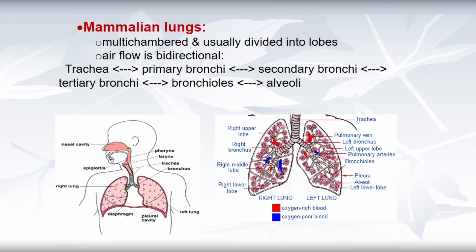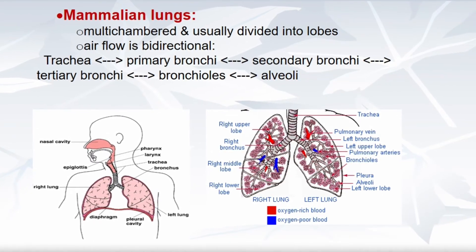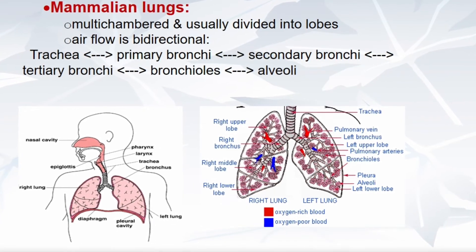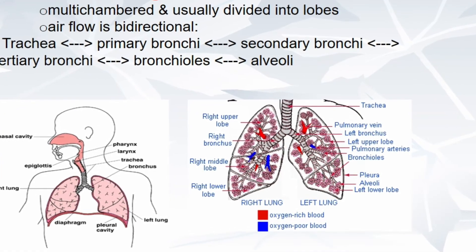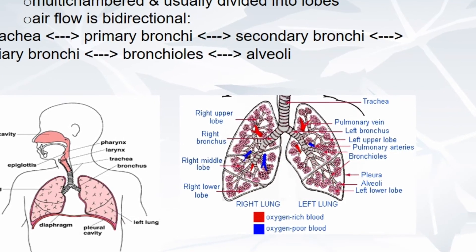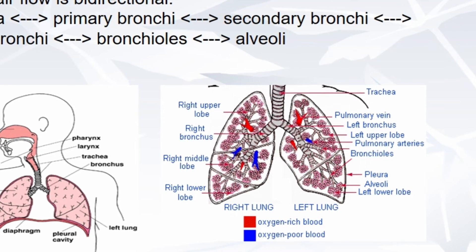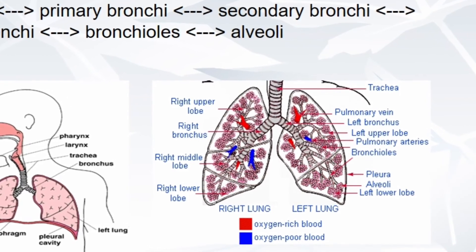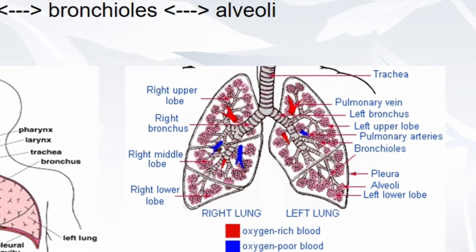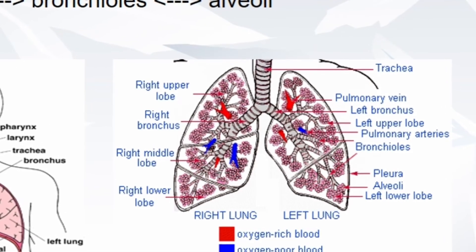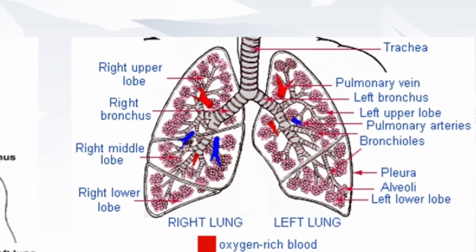Mammalian lungs are also highly developed, spongy, and very elastic. They lie protected in special chambers called pleural cavities, which are separated from the rest of the peritoneal body cavity by a muscular diaphragm. In most mammals, lungs are subdivided externally into lobes — two left lobes and three right lobes in humans. The bronchus divides repeatedly inside the lung, ultimately resulting in a large number of terminal grape-like clusters of air sacs or alveoli. Being terminal and blind, they always retain a certain amount of residual air after every expiration. In mammals, intercostal muscles, ribs, diaphragm, sternum, and abdominal muscles all aid in breathing.